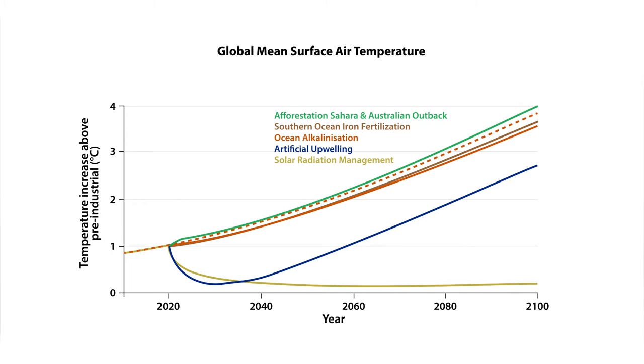Global mean temperature could possibly be altered by only two of those methods: artificial upwelling and solar radiation management, which we tested in our model. All the other methods do not lead to substantial cooling. One method, afforestation, our model even shows leads to warming — this was a surprise. By planting lots of trees in the Saharan Desert and Australia, we intended to suck up CO2, but we changed the color of the planet. The forest is much darker than the desert, so the planet absorbed more solar radiation and it got warmer in our model. That was an unintended side effect, and climate change was even more drastic in this massive afforestation simulation.